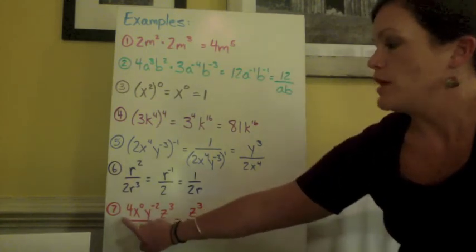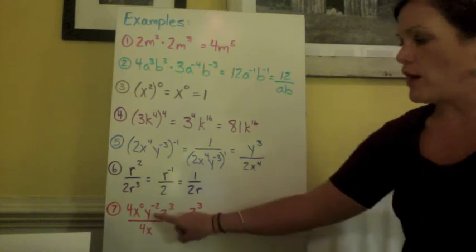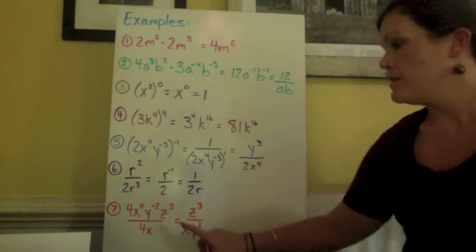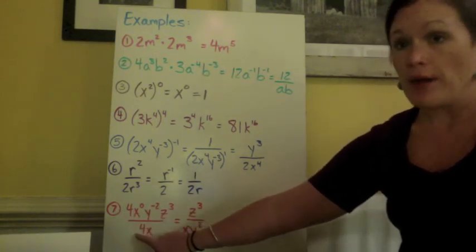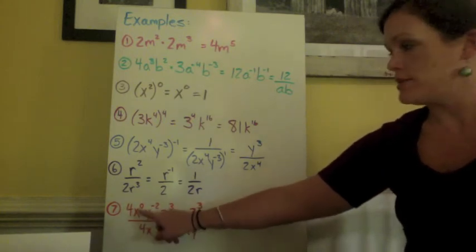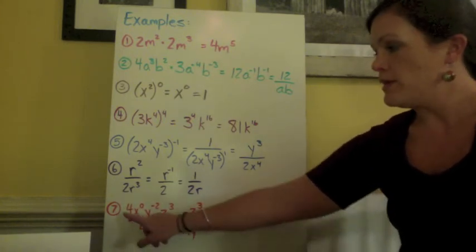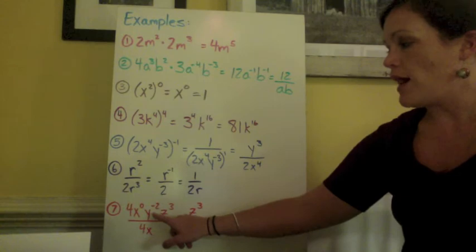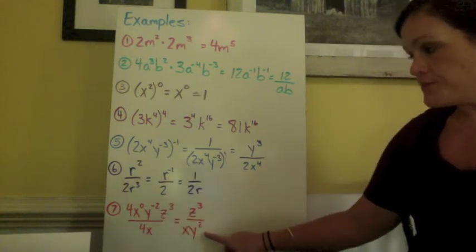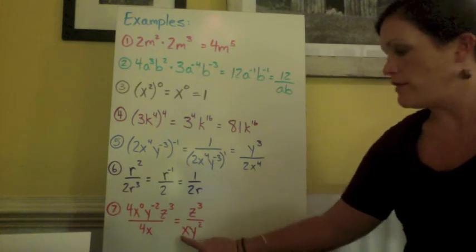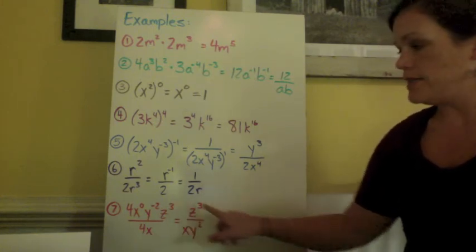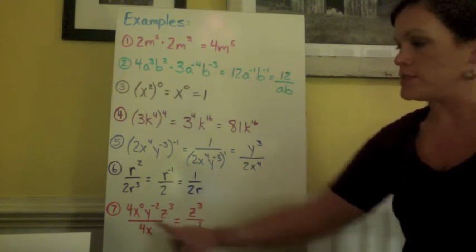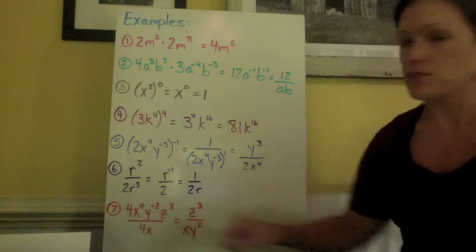Number 7. We have 4x to the 0 power, y to the negative 2 power, z cubed, all divided by 4x. We have a 4 and a 4 on the bottom, so they cancel out. We have x to the 0 power, which just equals 1. So the whole beginning of our expression would just cancel out or divide to equal 1. We have y to the negative 2, so I moved it to the bottom. x is still on the bottom. So we have xy squared in the denominator, and z cubed stays in the numerator. This big expression simplified pretty quickly since we noticed the 4s could cancel and that this x would simply equal 1.